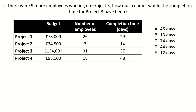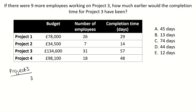If there were nine more employees working on Project 3, how much earlier would the completion time for Project 3 have been? We have a table with four projects, the budget, the number of employees, and the completion time in days. For this question we don't need to look at the budget — we are just interested in the number of employees and the completion time. For Project 3, we have 31 employees and it took 57 days.